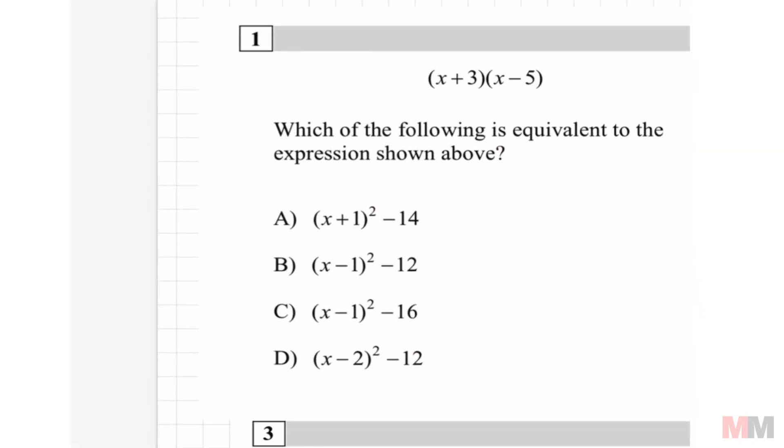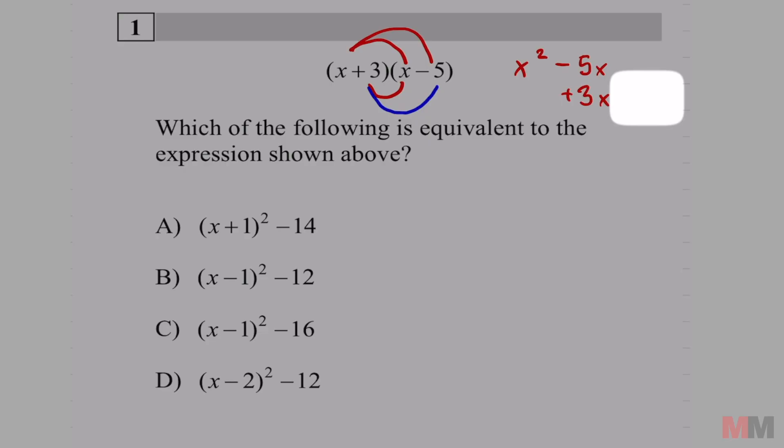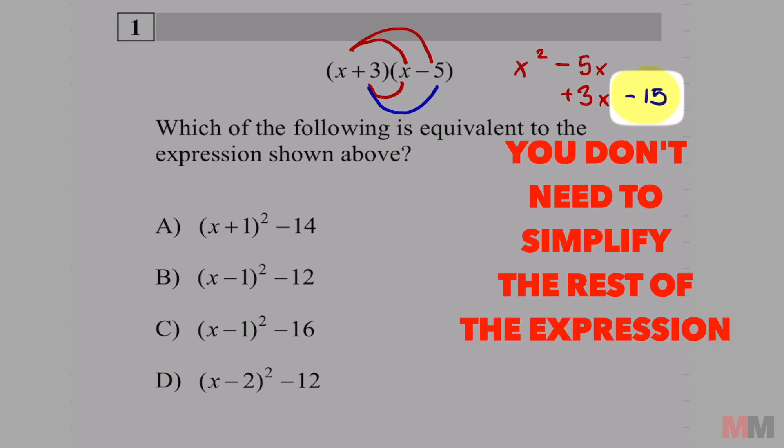All right, let's just jump into number one. Which one is equivalent to the expression above? If I were to distribute this, that's going to get me x squared. x times negative five is negative 5x. This is 3x positive. I like to combine like terms vertically because it's easier to organize. And the last part is all that we need for this problem. That's going to be negative 15. Negative 15 is the number I want to pay attention to, which represents my constant.